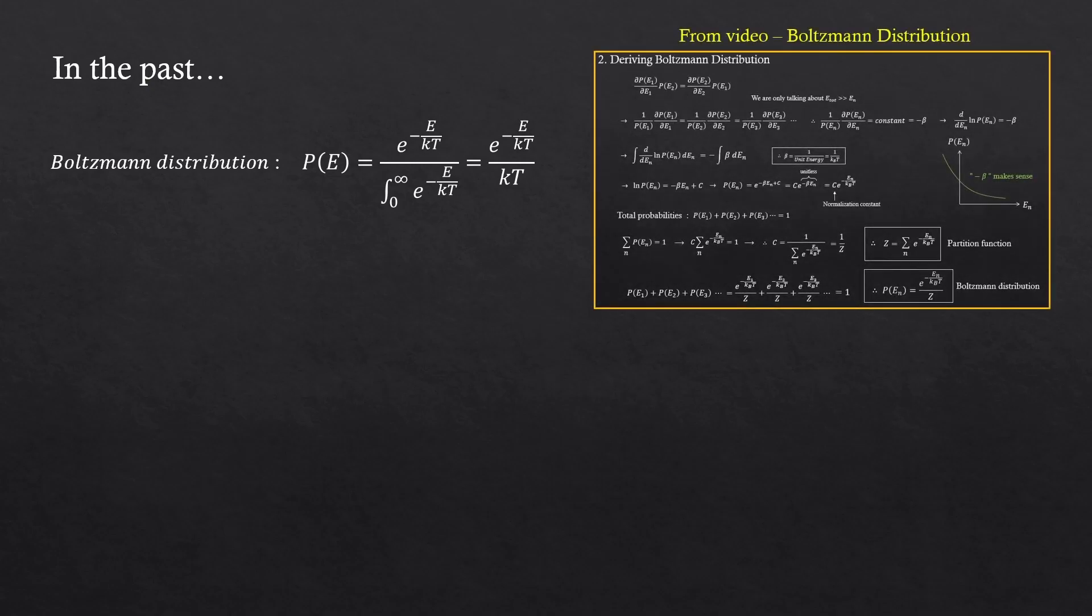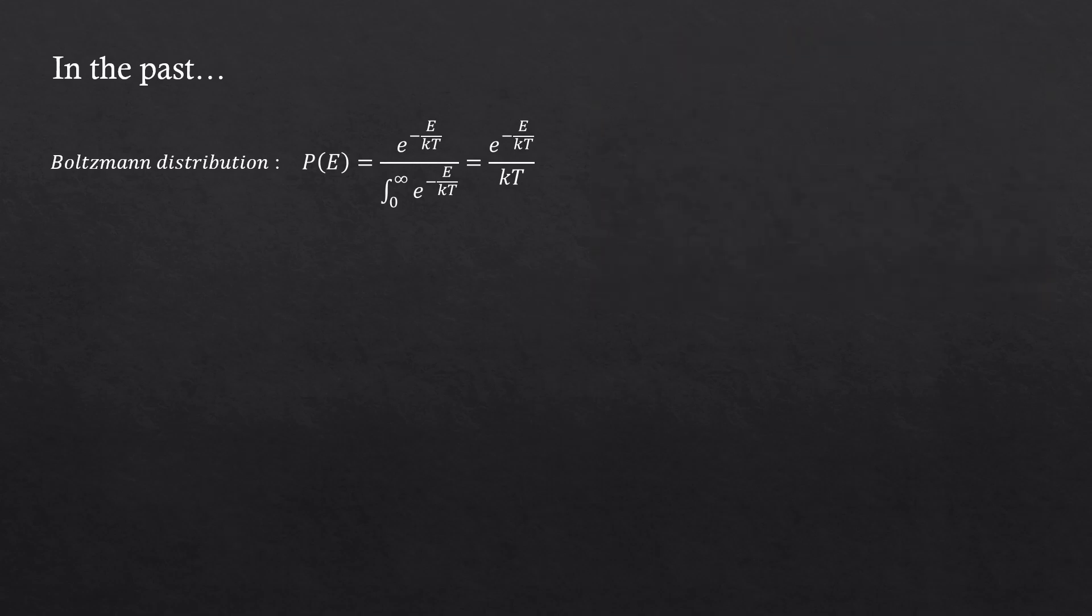About 120 years ago, when we didn't have much knowledge about radiation, we had this Boltzmann distribution that describes the relationship between temperature and energy. If you want to know where this comes from, I recommend you watching this video that I made.